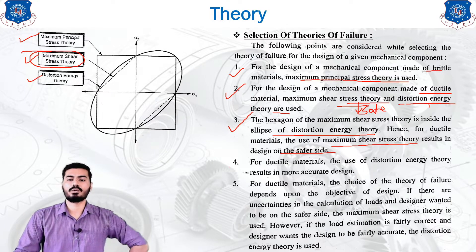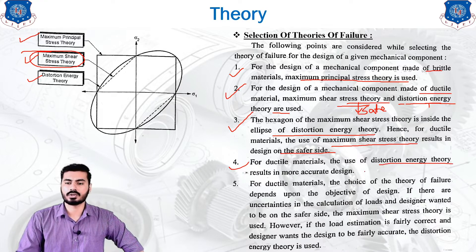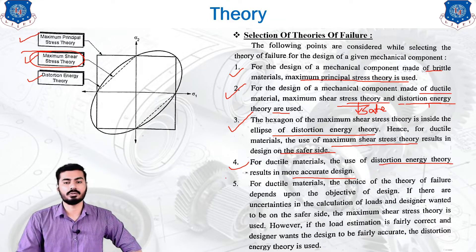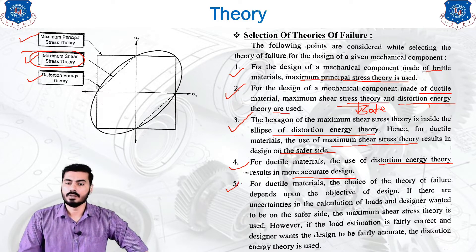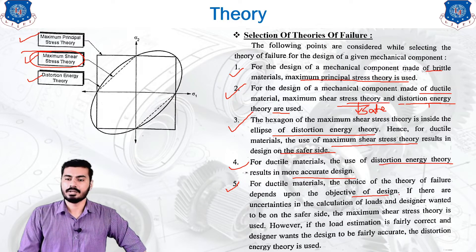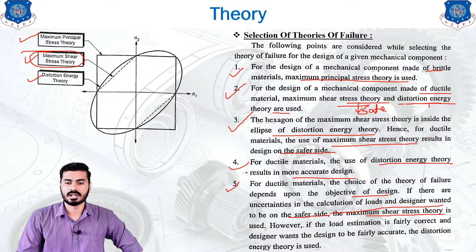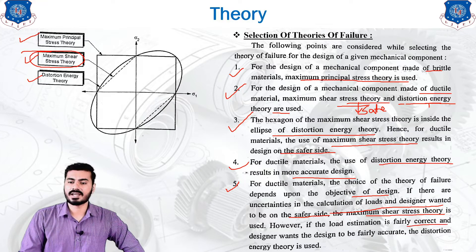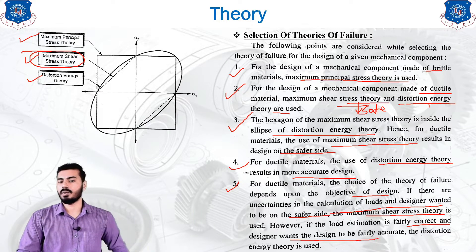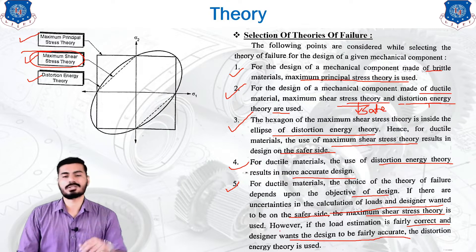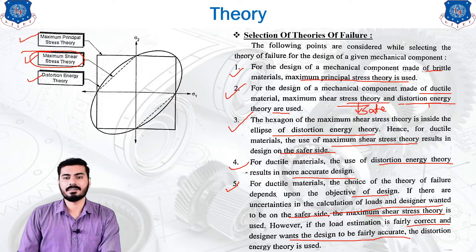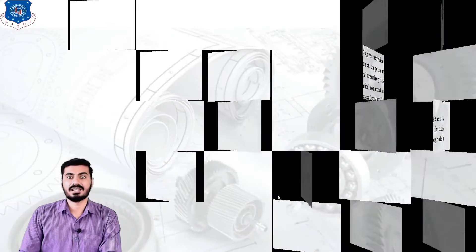For ductile material, the distortion energy theory is more accurate. The choice of the theory of failure depends upon the objective of the design. If there are uncertainties in the calculation of load and the designer wants to be on the safer side, the maximum shear stress theory is used. However, if the load estimation is fairly correct and the designer wants a fairly accurate answer, the distortion energy theory is used.